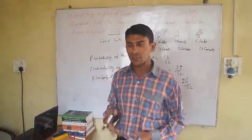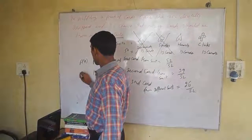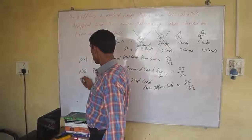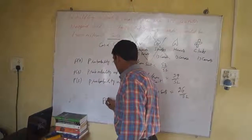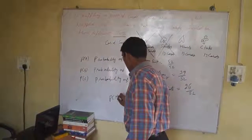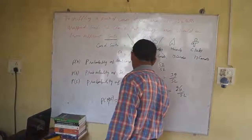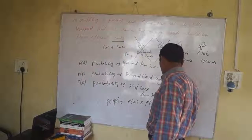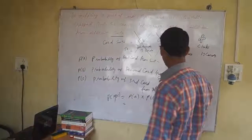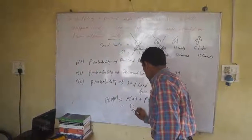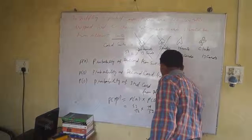So we have to multiply all these probabilities. This is probability A, this is probability B, and this is probability C. We have to calculate all this: probability A times probability B times probability C. So 52 divided by 52 into 39 divided by 52 into 26 divided by 52.